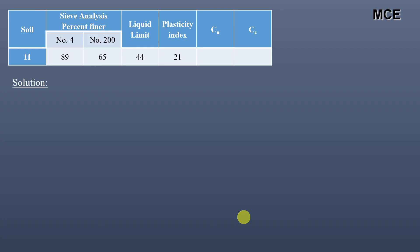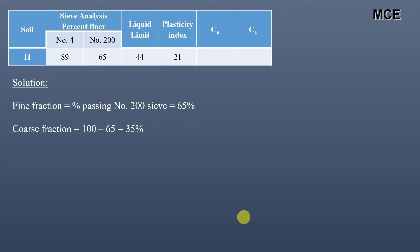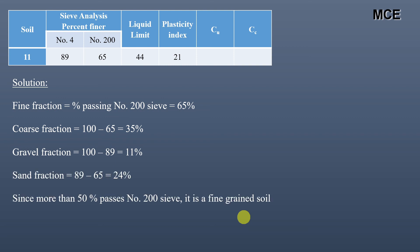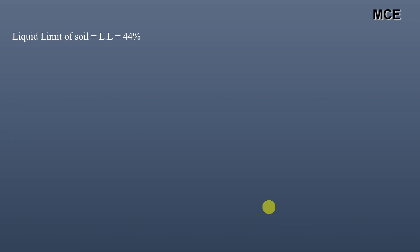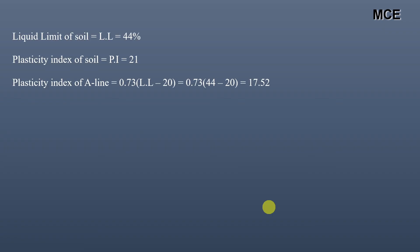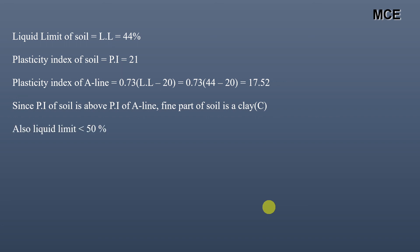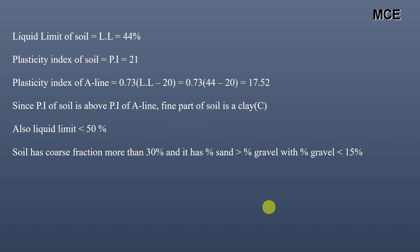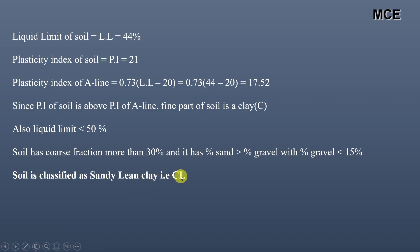For soil 11, fine fraction is 65%, coarse fraction is 35%, gravel fraction is 11%, sand fraction is 24%. More than 50% passes sieve 200, so it is a fine-grained soil. Liquid limit is 44%, PI is 21%, A-line PI is 17.52. PI is above the A-line so fine part is clay. Liquid limit is less than 50%. Coarse fraction is more than 30% with sand greater than gravel and gravel less than 15%, so the soil is Sandy Lean Clay, group symbol CL.